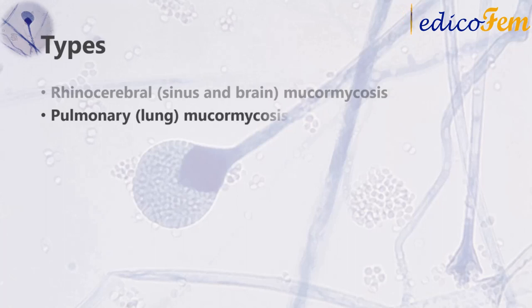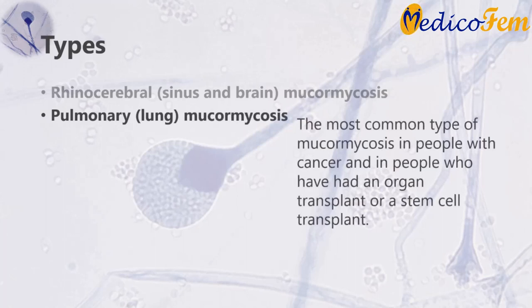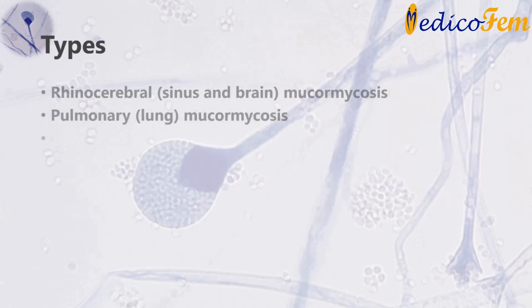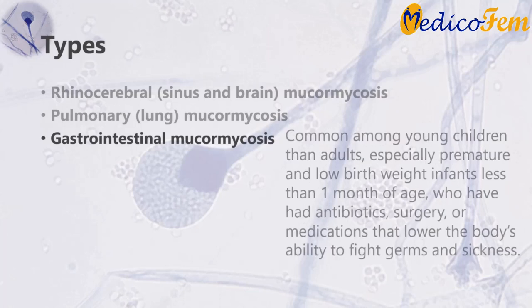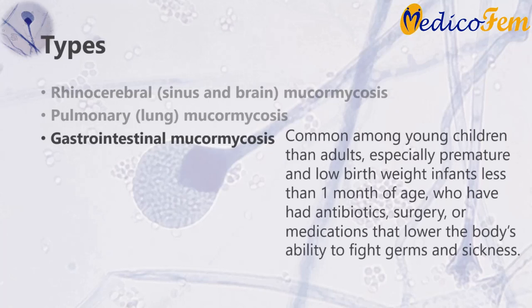Pulmonary mucormycosis is also common in people who have had an organ transplant or a stem cell transplant. Gastrointestinal mucormycosis is more common among young children than adults, especially premature and low birth weight infants less than one month of age who have had antibiotics, surgery, or medications that lower the body's ability to fight germs and sickness.